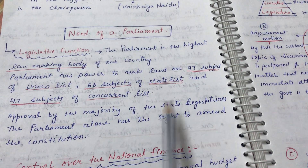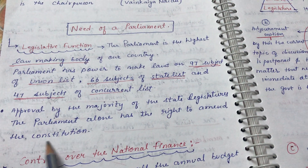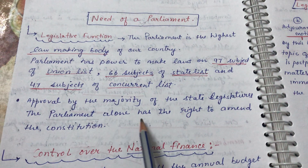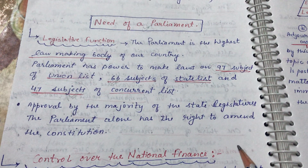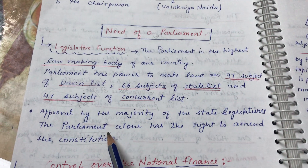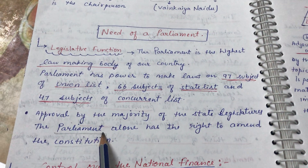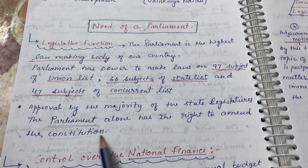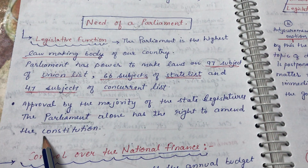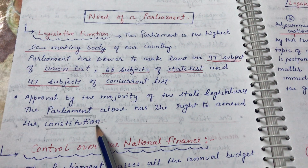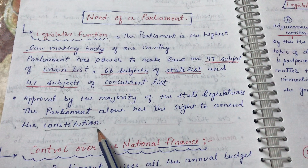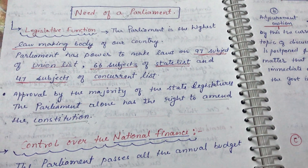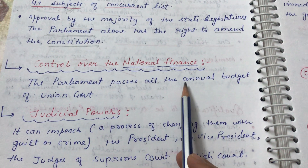Parliament alone has the right to amend the Constitution. Bringing a change in the Constitution is a long process, but only Parliament has that right — not the Prime Minister, not the President. After a long procedure of passing bills, the amendment is added to the Constitution.